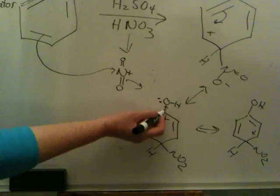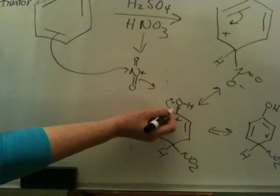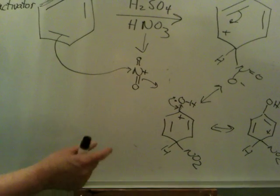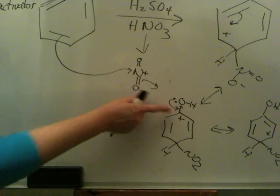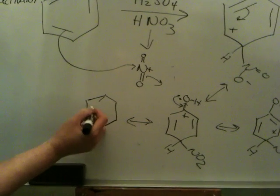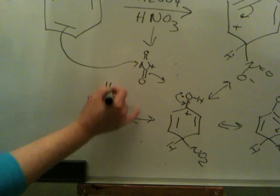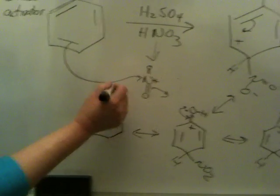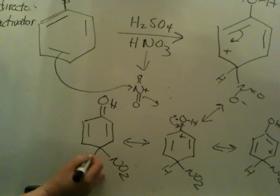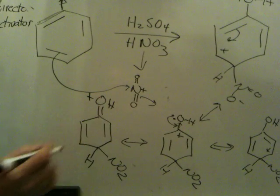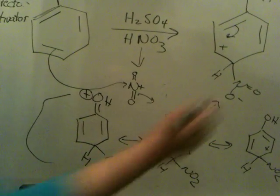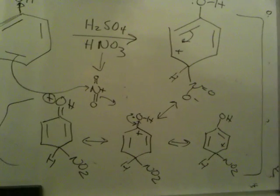This lone pair will delocalize into this positive charge and stabilize the charge. And this is what I meant about push-pull. The oxygen is pulling density through the sigma bond, but it's pushing density through the pi system. So this lone pair, this is what I called one-bond resonance in class, will be shared between this O and this positive charge, giving you this structure. We'll put this in brackets.